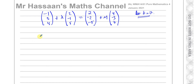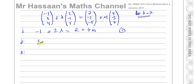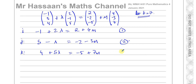I'll set up three equations from the I, J, and K components. Equation 1 (I): minus 1 plus 2 lambda equals 2 plus 4 mu. Equation 2 (J): 5 minus lambda equals minus 2 minus 3 mu. Equation 3 (K): 4 plus 5 lambda equals minus 5 plus 7 mu.